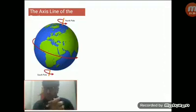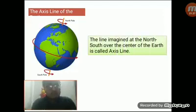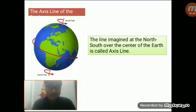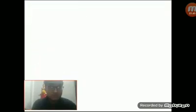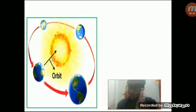So, let's have a look on the screen at the definition of the axis line of the earth. The line drawn at the north-south over the center of the earth is called the axis line. Now I am going to show a picture. This is the picture of the orbit of the earth.